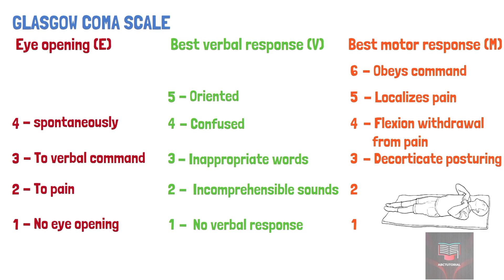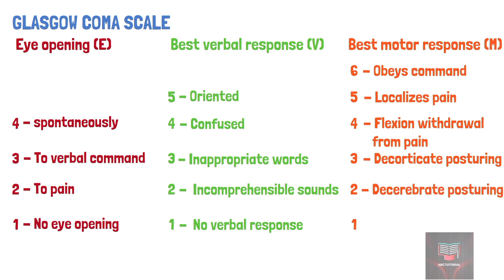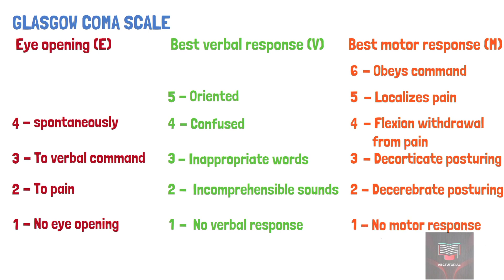The arms are usually bending towards the body and the wrists and fingers are bent and held on the chest. It is given a score of 2 when there is decerebrate posture, which involves the arms and legs being held straight out with the toes pointing downward. And it is given a score of 1 when there is no motor response.